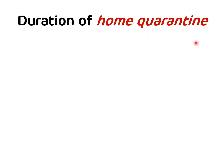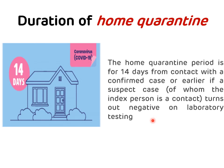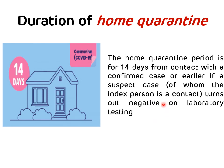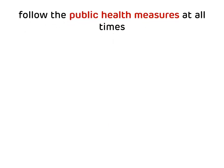The duration of home quarantine for COVID-19 is 14 days, and this can be reduced if the suspect case turns out negative on laboratory testing. Follow public health measures at all times.